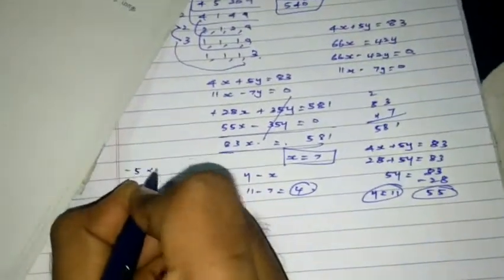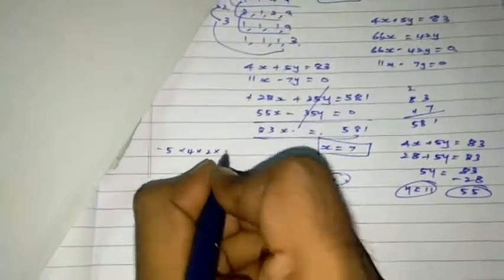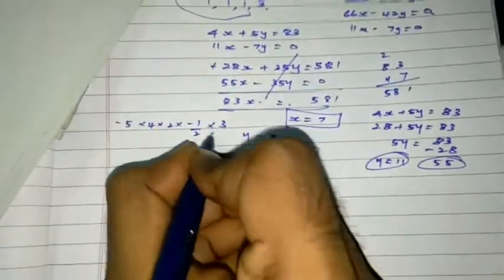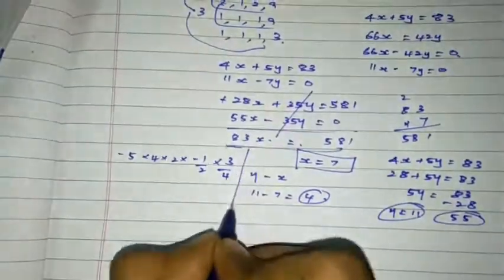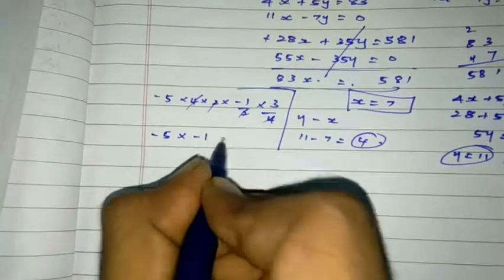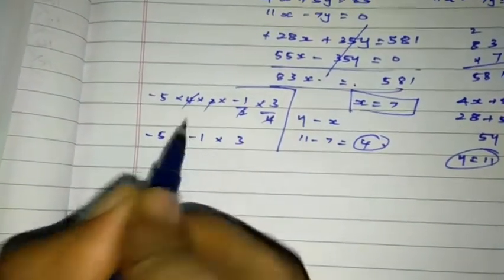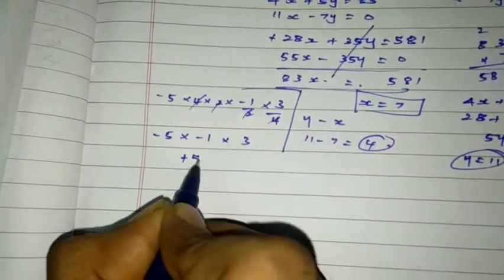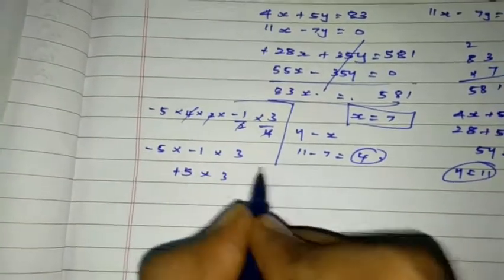The value of minus 5 into 4 into 2 into minus 1 by 2 into 3 by 4. Okay, this one is going to simplify. 2, 2 cancel 4, 4 cancel. Minus 5 into minus 1 into 3. Plus 5 into 3. 5 into 3 is 15. So option B 15.